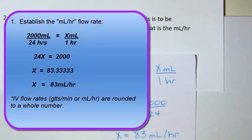Completion of this problem shows 2,000 milliliters over 24 hours, solving for x milliliter over 1 hour. x is equal to 83.3 infinity. When dealing with milliliter an hour flow rate or drop per minute rates, these will always be to a whole number. So our answer is x is 83 milliliters per hour.